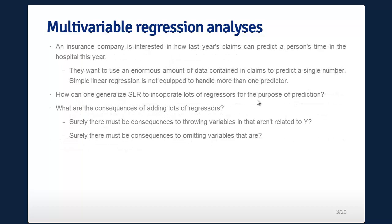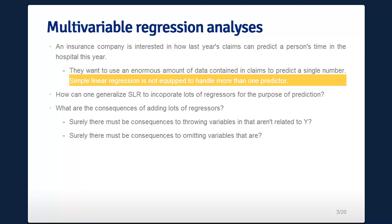Another example of how you might want to use multivariable regression: an insurance company is interested in how last year's claims can help predict a person's time in the hospital this year. They want to use the enormous amount of data collected in claims to predict a single number. But linear regression isn't equipped to handle anything more than one predictor. How can we generalize linear regression to incorporate lots of regressors for prediction? And what are the consequences — of throwing in variables unrelated to y, or omitting variables that are?